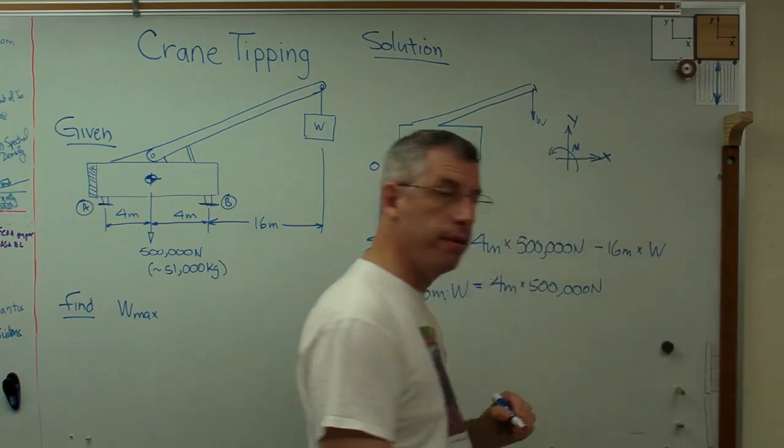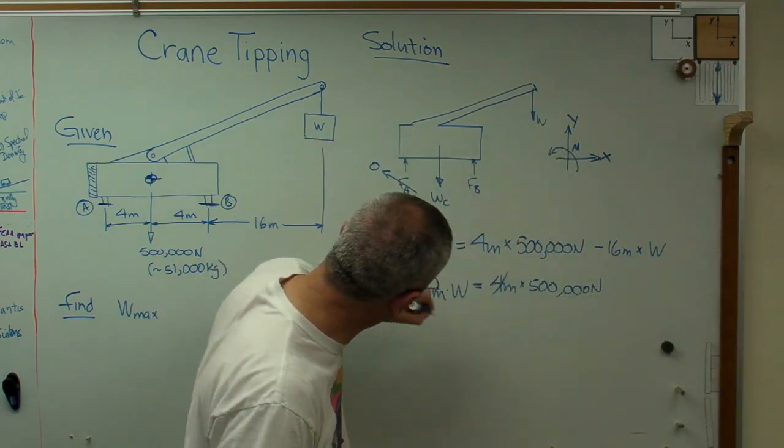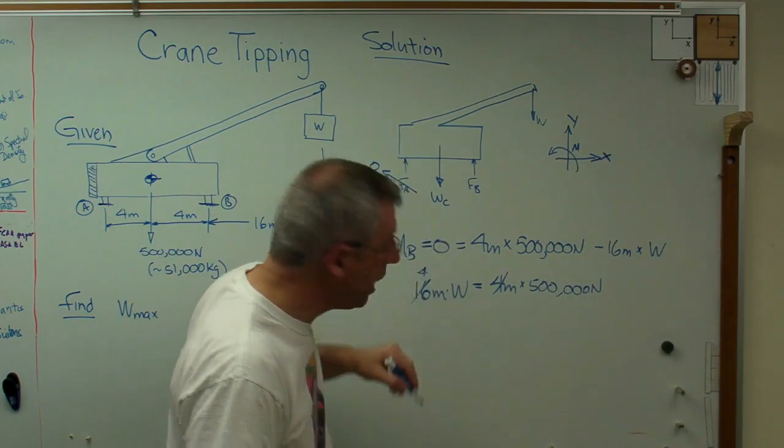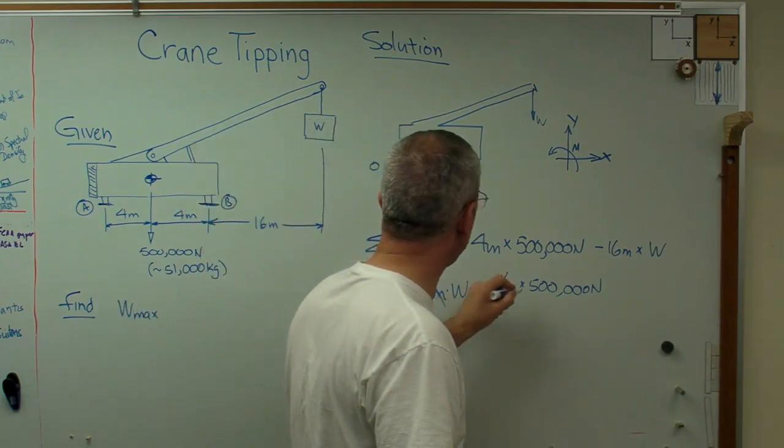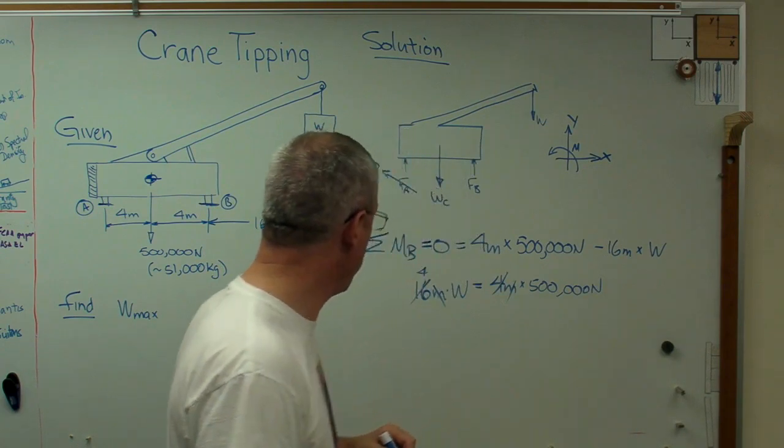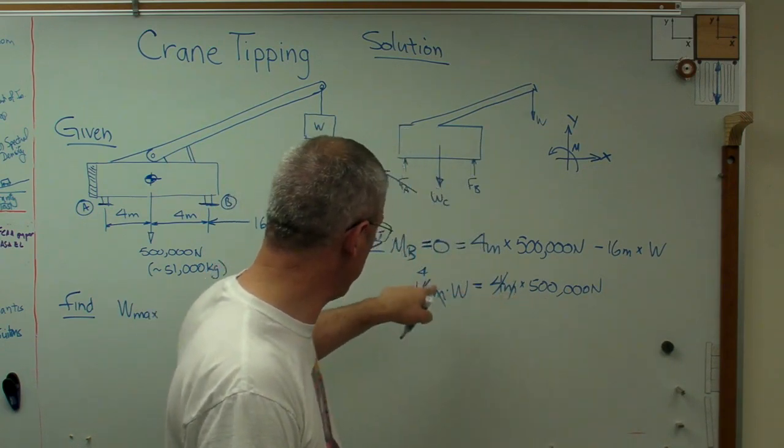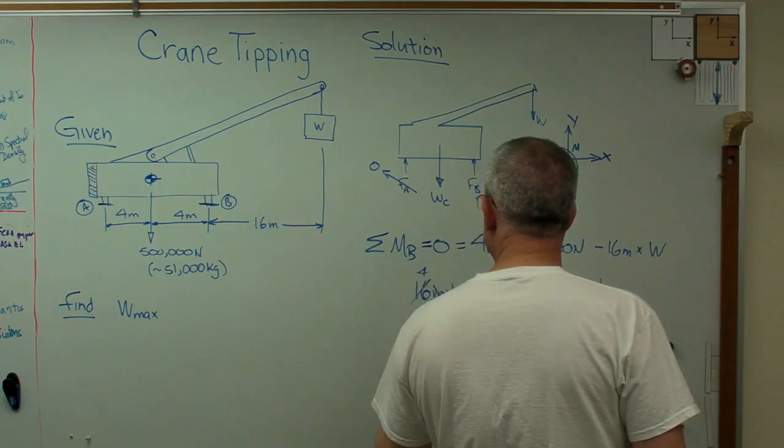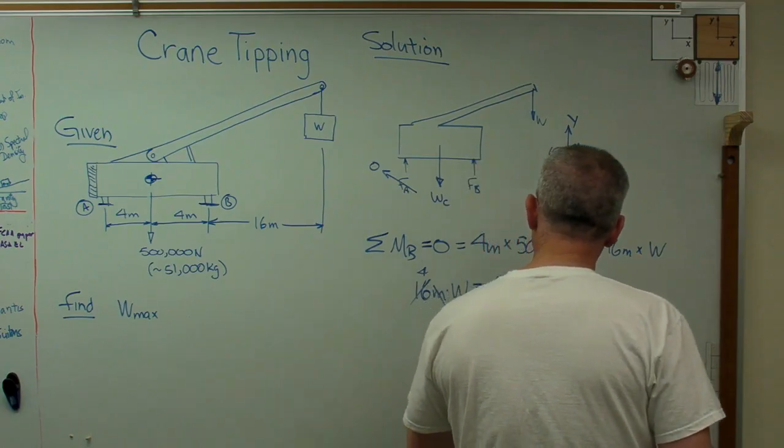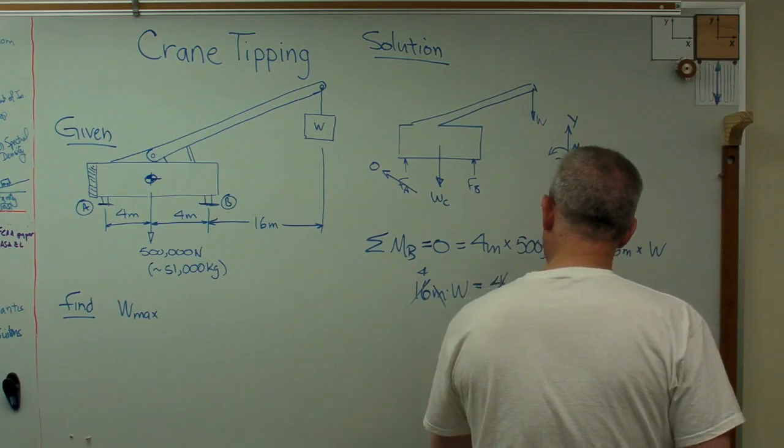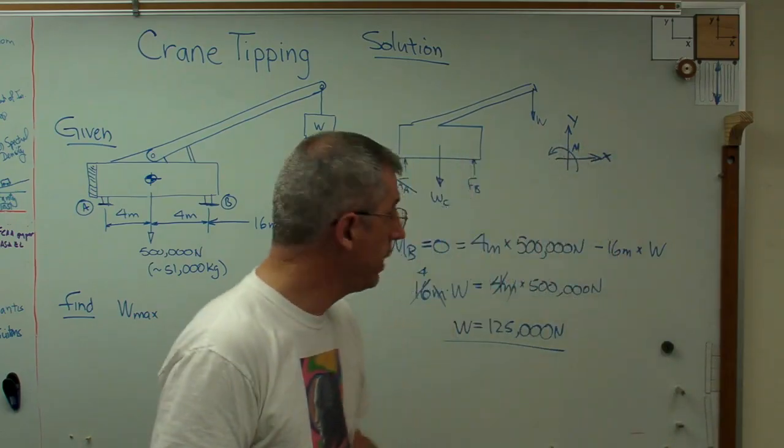16W equals four meters times 500,000 newtons. I can cancel a few things out here. I can cancel that out. And remember, you can cancel out units just like you cancel out numbers. So I'm going to cancel that out and that out. And I'm going to have weight equals 500,000 newtons divided by four. So when I do that, I'm going to get 125,000 newtons. And that's the answer.